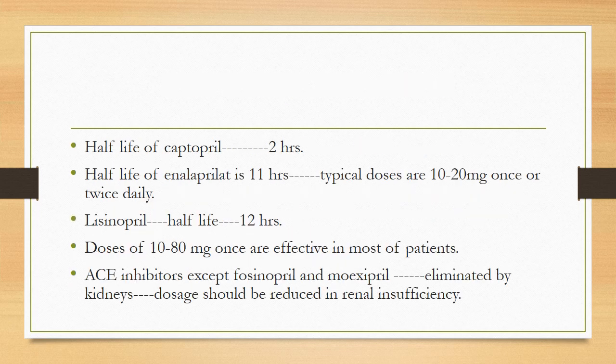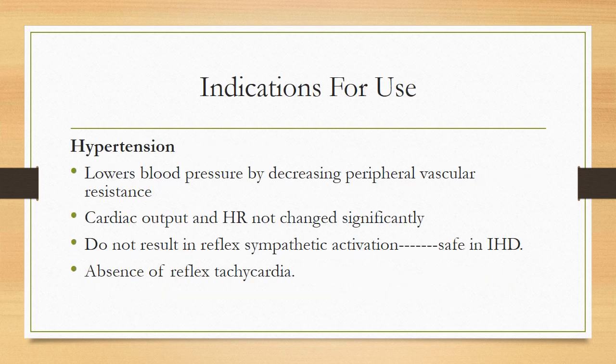The half-life of captopril is 2 hours — short — while the half-life of enalaprilat is 11 hours. Typical doses are 10 to 20 mg once or twice daily. Lisinopril half-life is 12 hours, so doses of 10 to 80 mg once daily are effective. ACE inhibitors, except for fosinopril and moexipril, are eliminated by the kidneys, so dosage should be reduced in renal insufficiency.